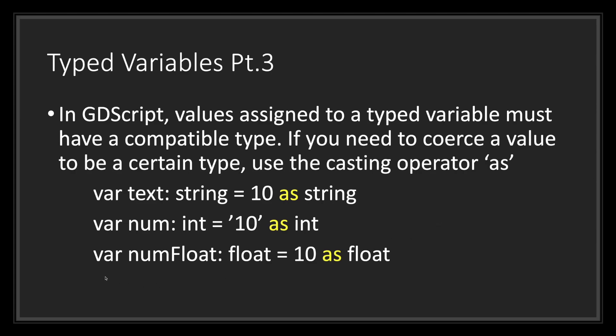Let's go ahead and take a look at our last example. Here we have a variable called num float and we've assigned it the data type float. Now what you see here is that we have the integer value 10 and we want to convert that into a float and assign that new value into num float.